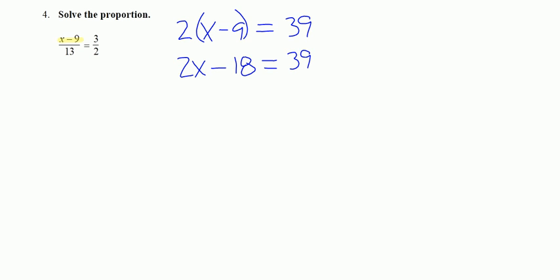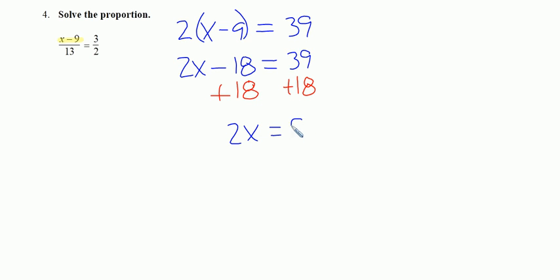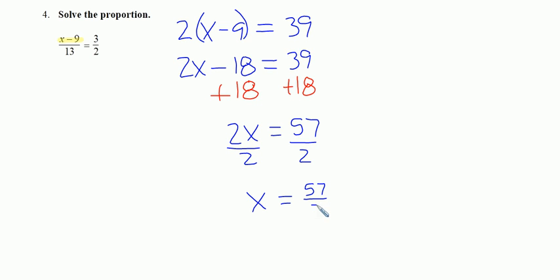Now we just have a linear equation to solve. Let's add 18 to both sides — that's the inverse of subtract. The result gives us 2x equals 57. When we divide by 2, we get x equals 57 halves. 57 is an odd number so 2 won't go into it evenly, so we leave our answer as x equals 57 halves.